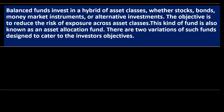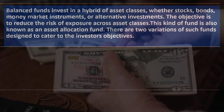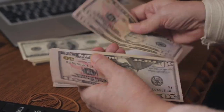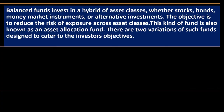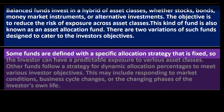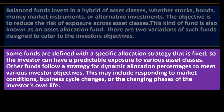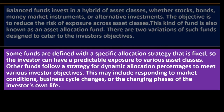Balanced funds invest in a hybrid of asset classes — whether stocks, bonds, money market instruments, or alternative investments. These funds aren't just invested in stocks or just bonds; they have a hybrid mix, trying to balance across multiple investment types. The objective is to reduce the risk of exposure across asset classes. This kind of fund is also known as an asset allocation fund. There are two variations: some funds are defined with a specific, fixed allocation strategy so the investor has predictable exposure to various asset classes. Other funds allow dynamic allocation percentages to meet various investor objectives.